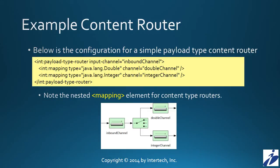Here's an example of a content router — a very simple one. In this case, messages coming into the inbound channel are going to have their content examined, their payload examined. Those that have a message type that contains a double as its payload will go to the double channel. Those messages that have an integer as their payload go to the integer channel. It's that simple.